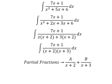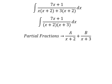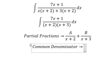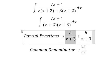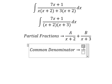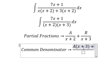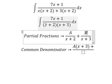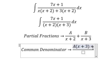After that, we do common denominator. So this one is missing x plus 3, so capital A will multiply by x plus 3. And capital B multiplied by x plus 2.